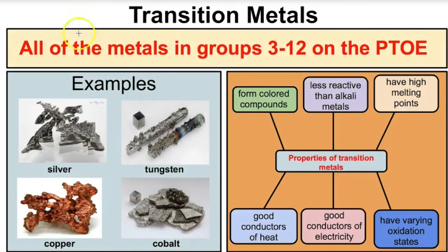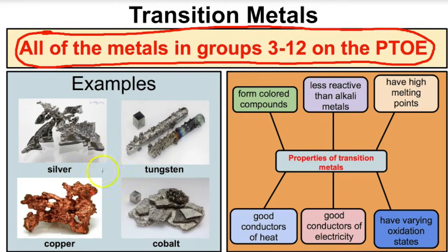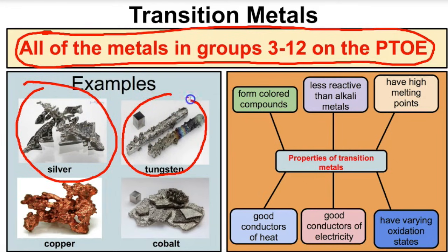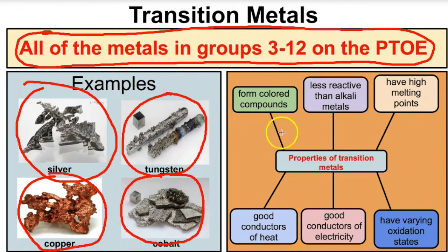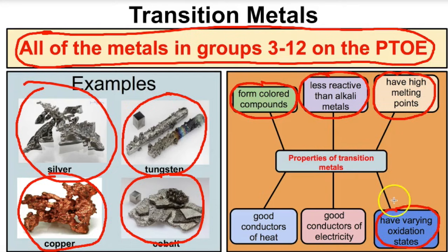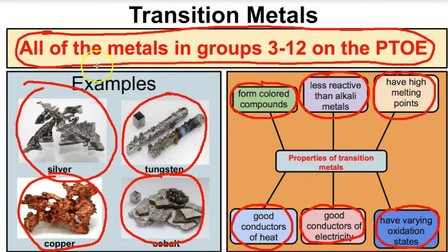Moving across the periodic table, next we have the transition metals — all the metals in groups 3 through 12. Examples include silver, tungsten, cobalt, and copper. When these react with other elements, they typically form colored compounds. They're less reactive than the alkali and alkaline earth metals, typically have high melting points, and have varying oxidation states — meaning they can form positive one, two, three, or even four ions. They're also good conductors of electricity and heat.